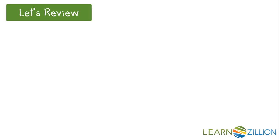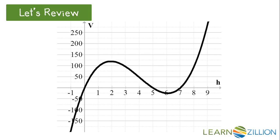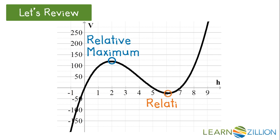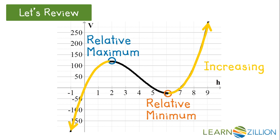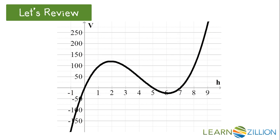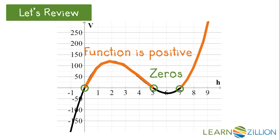Let's review. This is the graph of a polynomial function. It has a relative maximum at one point and a relative minimum at another point. It has two intervals where the function is increasing and one interval where the function is decreasing. We can also identify the zeros of the function at three points, because the output of each point is zero. We have two intervals where the function is positive and two intervals where the function is negative.